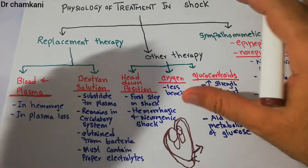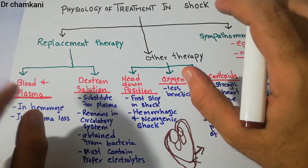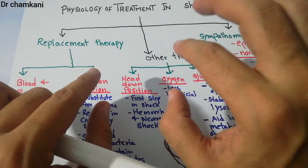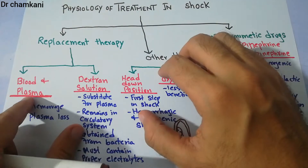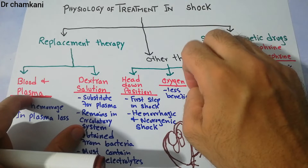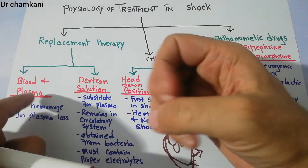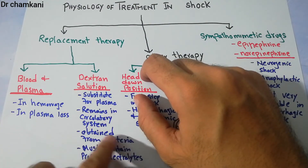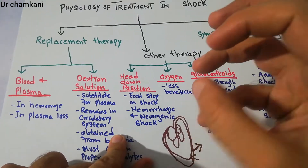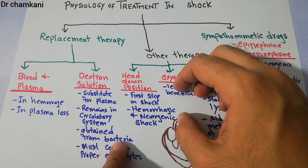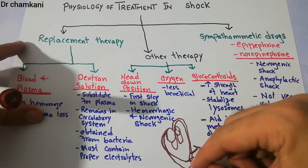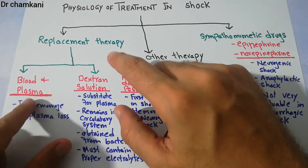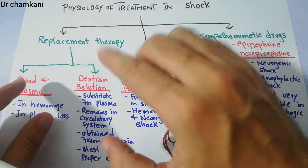Another important characteristic is that the electrolytes present in the substitute fluid should be equal to those in the plasma — the amount of potassium, calcium, sodium, and glucose in the substitute fluid should match that of plasma. One of the most important substitutes for plasma is dextrin solution. It remains in the circulatory system because it has larger particles, obtained as a byproduct from bacterial culture. These larger particles remain in circulation and do not go out through small pores, and they contain proper electrolytes. So when there is a shock due to plasma or blood loss and whole blood is not available in an emergency, this solution can be used as an ideal substitute.